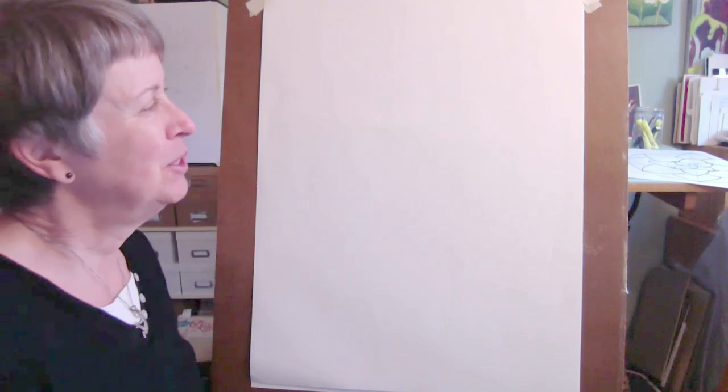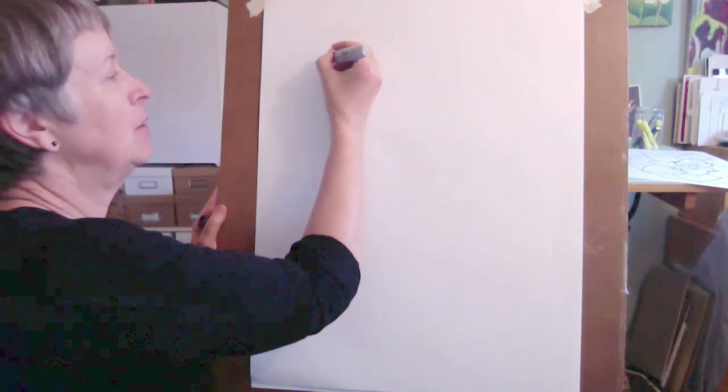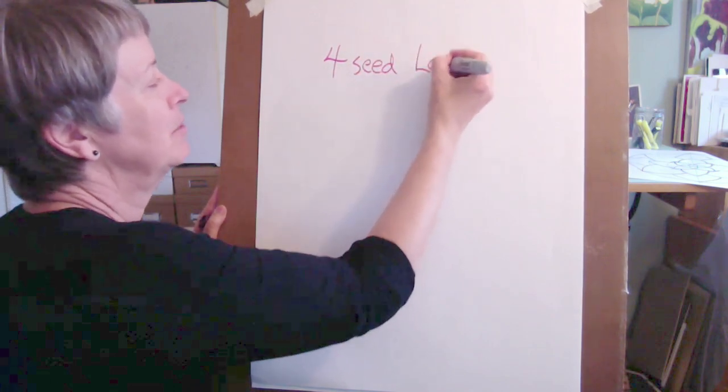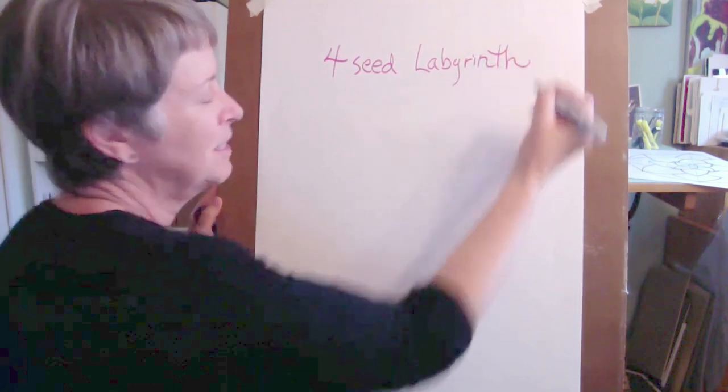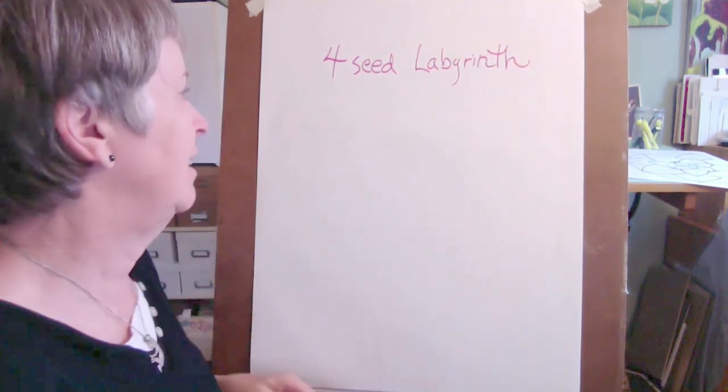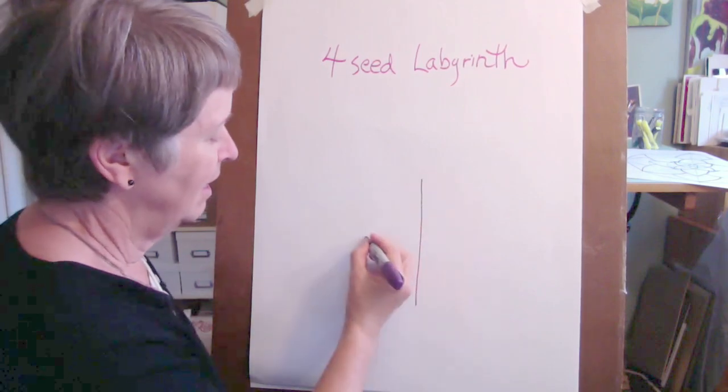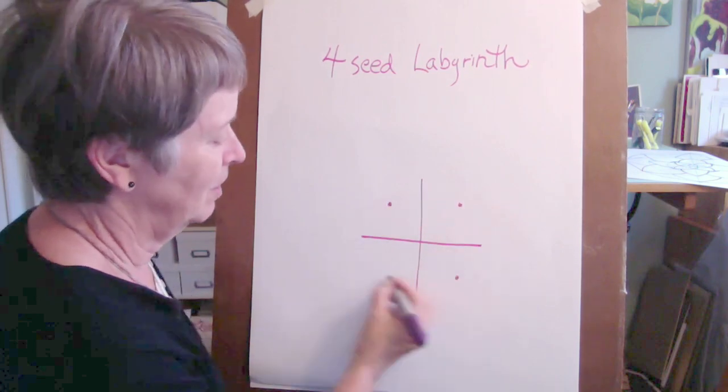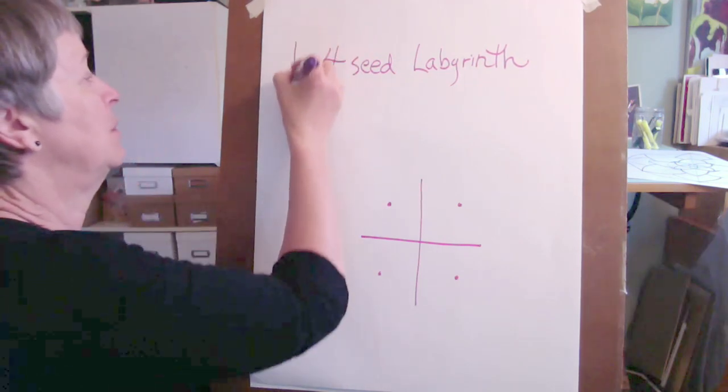I am going to do a real quick little video about labyrinths. This is called a four-seed labyrinth. This is a very ancient type of meditation practice, and this is the key. So that's the little key that you need to do it. I'll just put it up here as well.